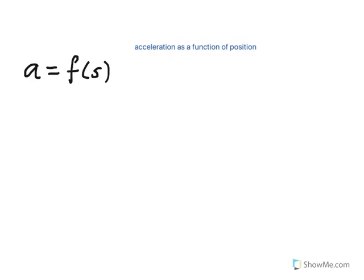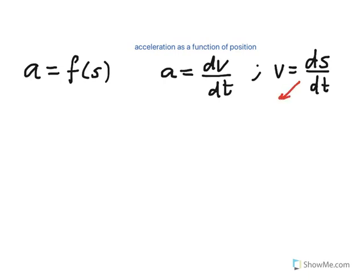So the way this is done is basically you start with defining acceleration, which is the derivative of velocity, and at the same time look at the definition of velocity, which is the derivative of position.